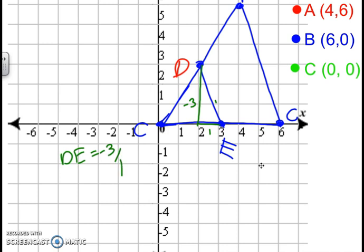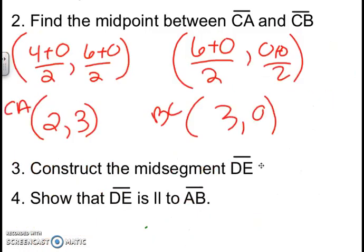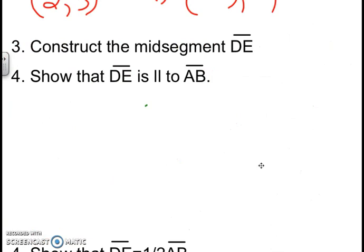Now let's check the slope of AC. Counting from A to C: down 6 over 2, so that slope is negative 6 over 2, which also simplifies to negative 3. So I've proved that DE is parallel to AC. DE's slope equals negative 3 and AB's slope equals negative 3, so they checked out — they're parallel.